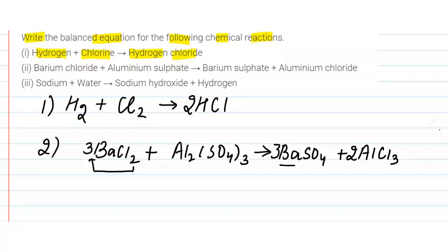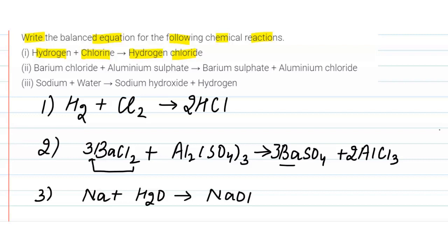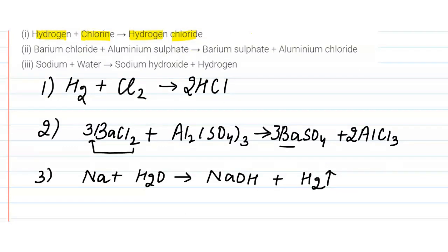The third equation is sodium (Na) plus water (H₂O), which gives sodium hydroxide (NaOH) plus hydrogen (H₂). Now let us balance the chemical equation. We have one atom of sodium and one on each side, but on the left-hand side we have two atoms of hydrogen in H₂.